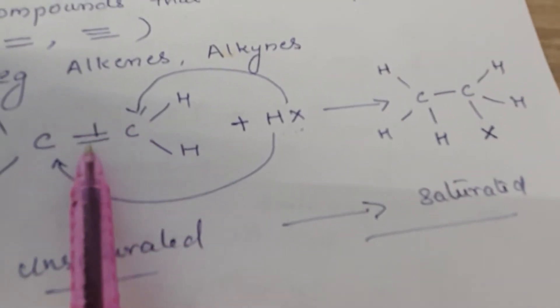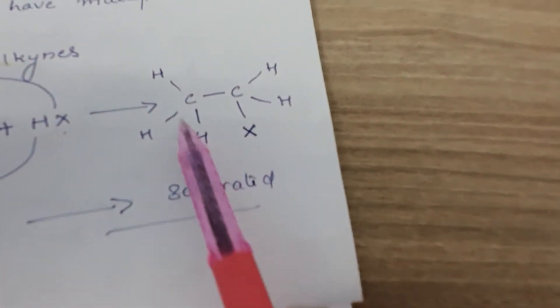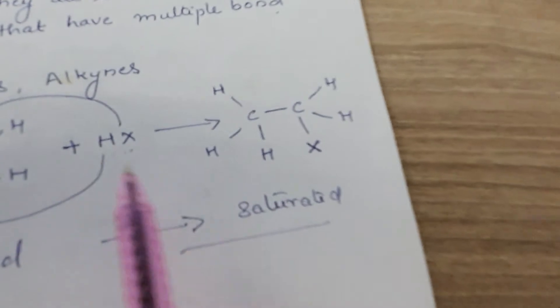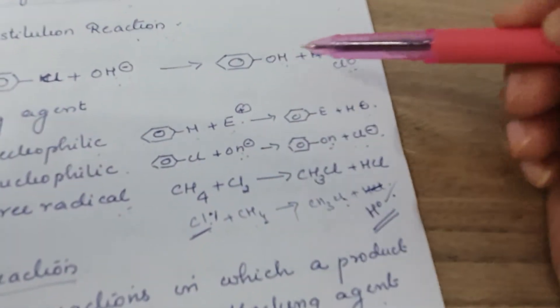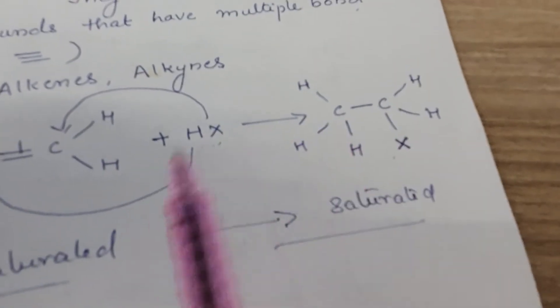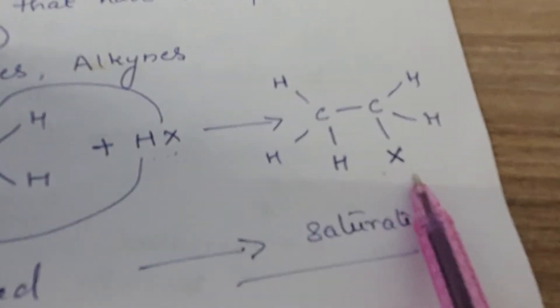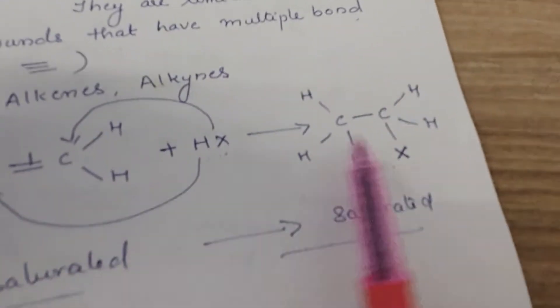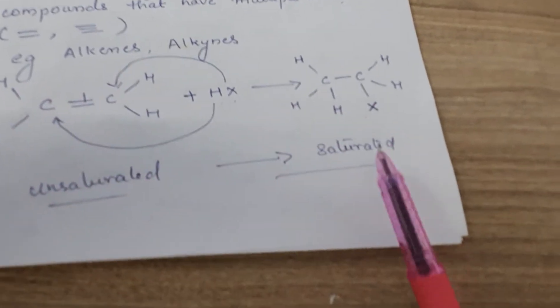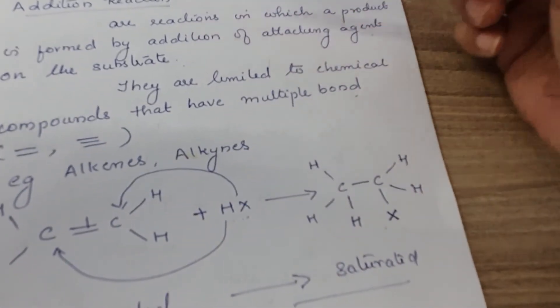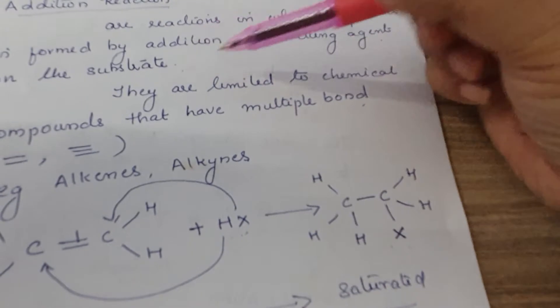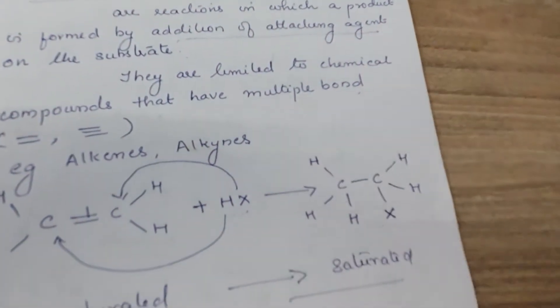When ethylene reacts with a hydrogen halide HX — where X can be chlorine, bromine, or iodine — HX is added across the double bond. The H and X add to the two carbon atoms of the double bond. So in the molecule, for example, HCl is added to ethylene. The unsaturated molecule is converted to a saturated molecule through addition.